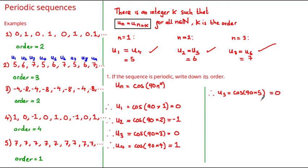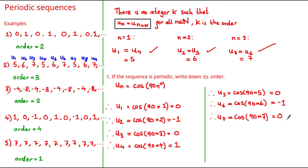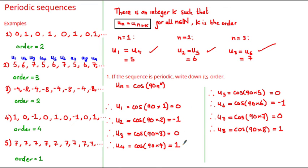After writing down the first four terms we can't quite see a pattern, but let's continue. The next term u sub 5 is equal to 0, u sub 6 is equal to negative 1, u sub 7 is equal to 0, and u sub 8 is equal to 1. So looking at these terms we have 0, minus 1, 0, 1, 0, minus 1, 0, 1. Hopefully you can see that this is a periodic sequence with four terms before it repeats itself, and therefore yes, this is a periodic sequence with order equal to 4.